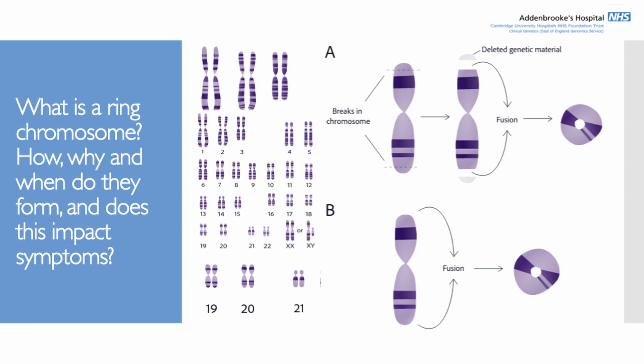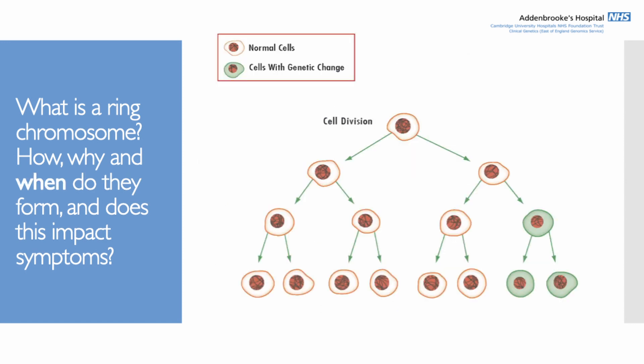The telomere-fusion type — where nothing is lost and the ends just fuse together — usually happens early on in the life of the embryo. It's not there right from the beginning, but at some point early on one of the cells has the ring 20 chromosome form, and then all of the cells produced in that cell line also have ring chromosome 20.